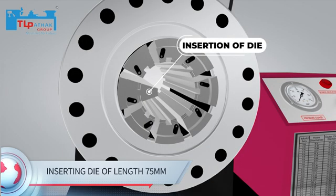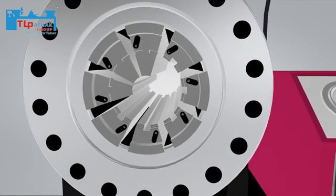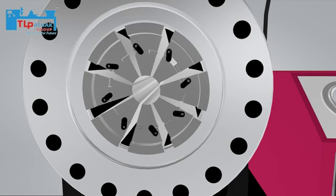After that, the die teeth are inserted to get the required shape for the crimped pipe. After die teeth are inserted, the teeth are locked.